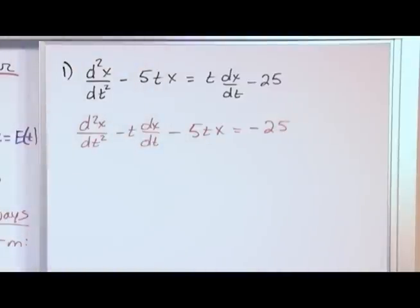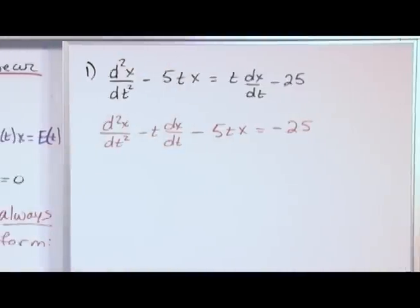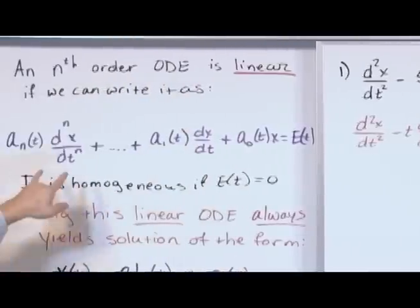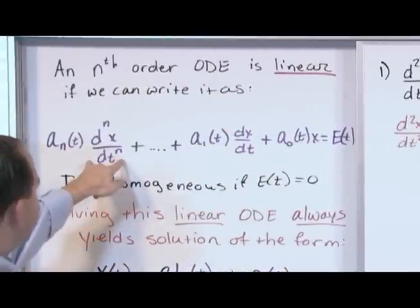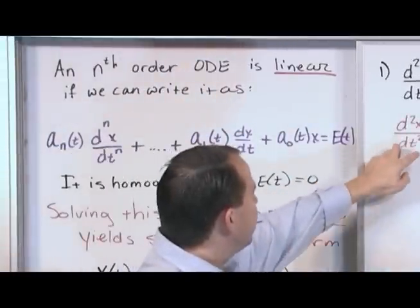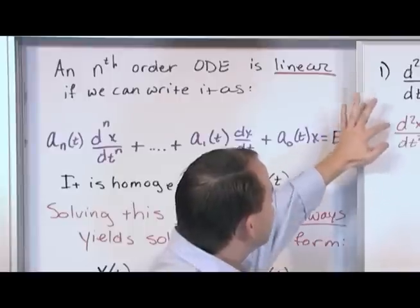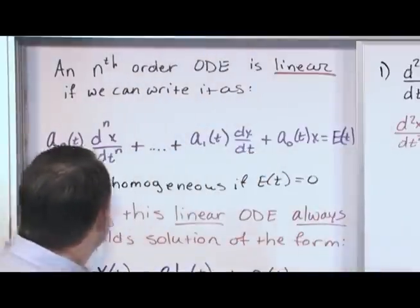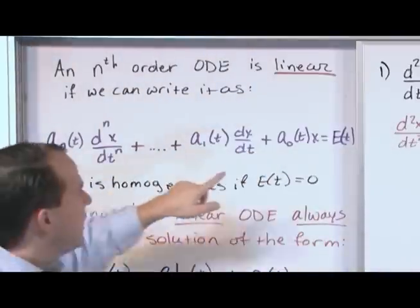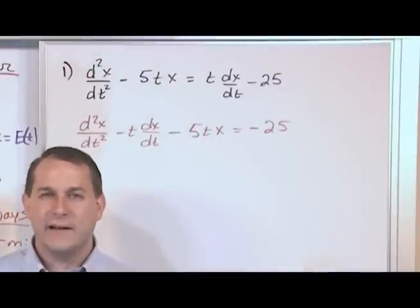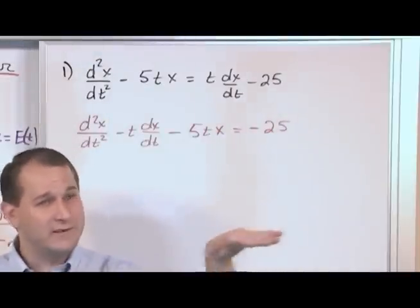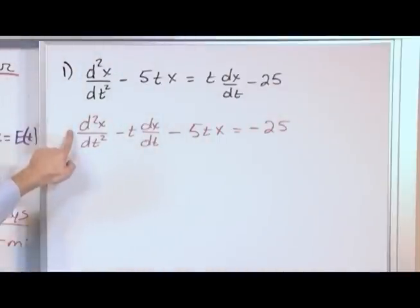Now look at this and tell yourself and ask yourself, is this linear or non-linear? Well, let's look at our definition. We have nth derivative here, we have a second derivative here. The function of time in front of this guy, which is this guy right here, this a n of t, is just simply 1. Don't forget that a constant really is a function of time, it's just constant. So we get a 1 here.